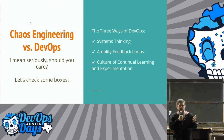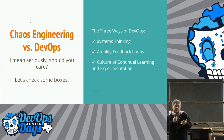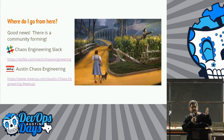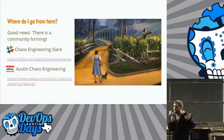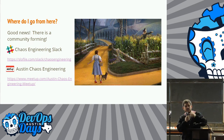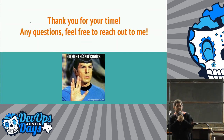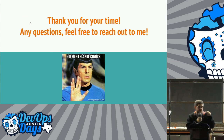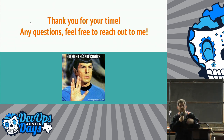So my last point: what's chaos engineering versus DevOps? How does this fit together? It aligns with the three cores of DevOps and systems thinking. Where do you go from here? There is a community forming around it on the Chaos Engineering Slack channel — the link is in the slides. We also just started an Austin Chaos Engineering meetup; June 8th is the first meeting. Check it out. Thank you for your time — reach out to me on the Chaos Engineering Slack or find me here, and go forth in chaos.